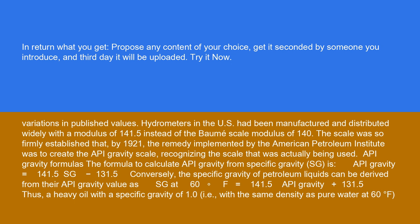The formula to calculate API gravity from specific gravity, SG, is: API gravity equals 141.5/SG minus 131.5. Conversely, the specific gravity of petroleum liquids can be derived from their API gravity value as SG at 60°F equals 141.5/(API gravity plus 131.5).